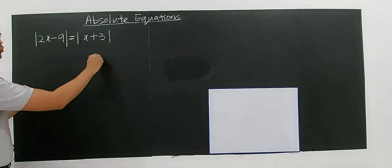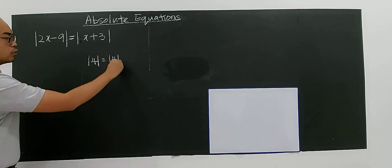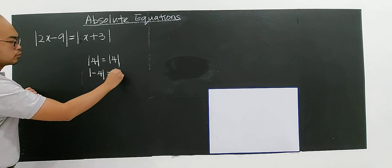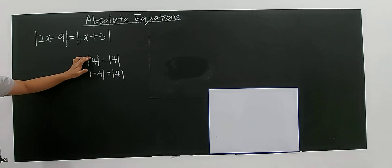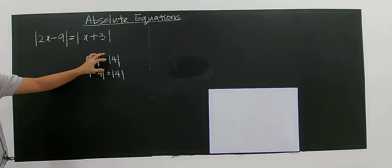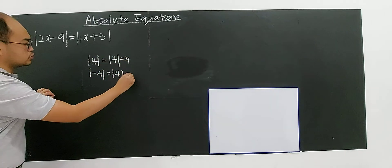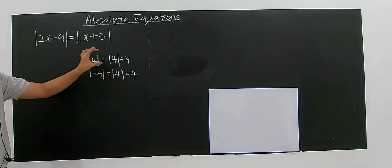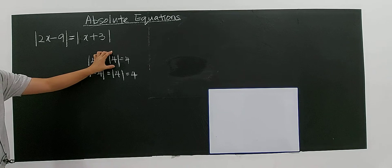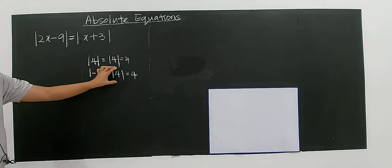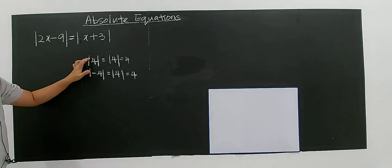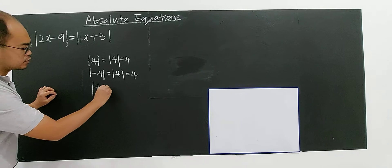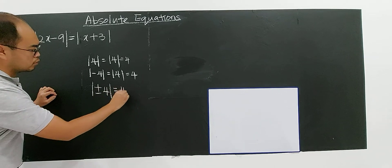For example, if I said modulus of 4, it will still equal to modulus of 4, or I can say modulus of negative 4 is still equal to modulus of 4. So the positive or negative gives the same result because both give you 4. So I can say that modulus of plus or minus 4 is still equal to modulus of 4.